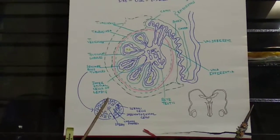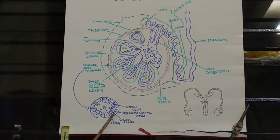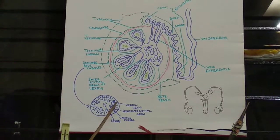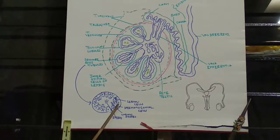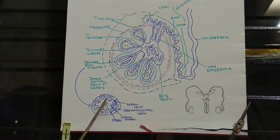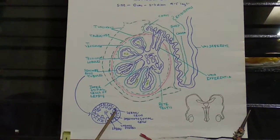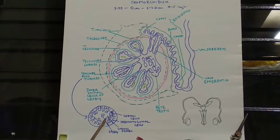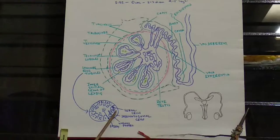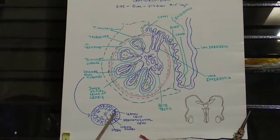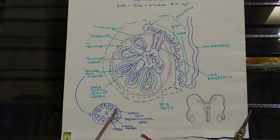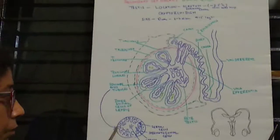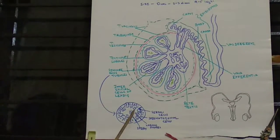Looking at the inner structure of the seminiferous tubules, the outer covering contains germinal epithelium which forms spermatogonial cells, interrupted by cells called Sertoli cells. Spermatogonial cells help in the production of sperm, while Sertoli cells mainly nourish the various stages of sperm development. Within the seminiferous tubules we find various stages of sperm formation.